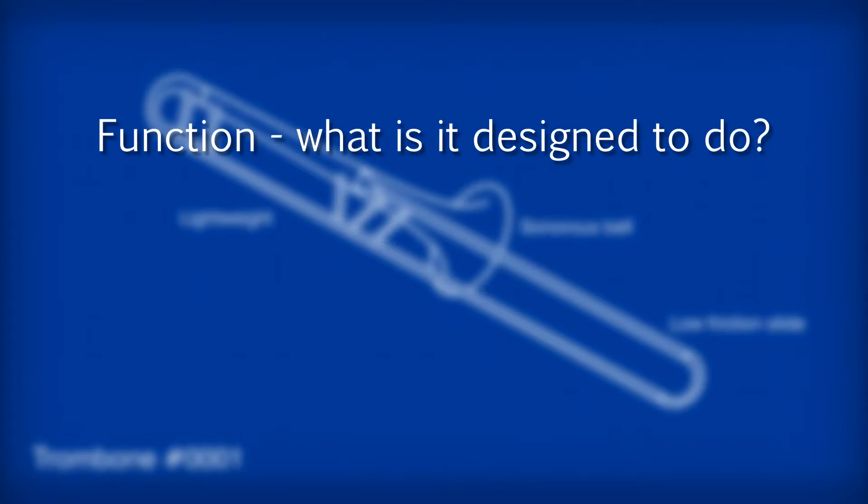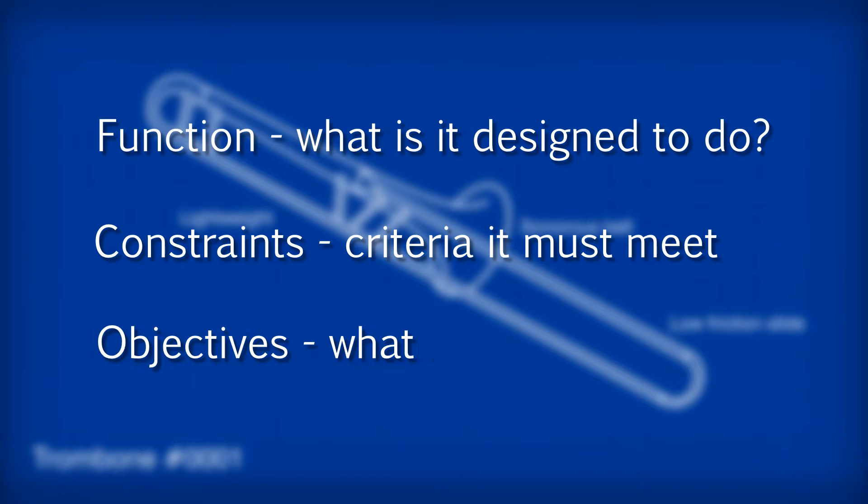Firstly, its function - what is it designed to do. Secondly, its constraints - a criteria which the material must satisfy, for example it must be a certain stiffness. Thirdly, its objectives - what is it designed to be, for example, lightweight.